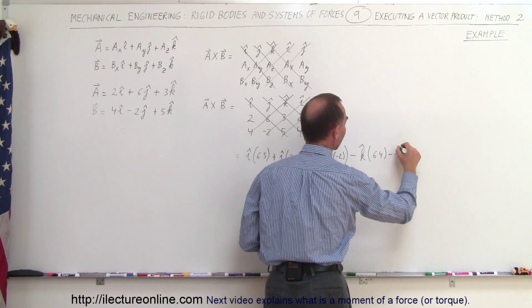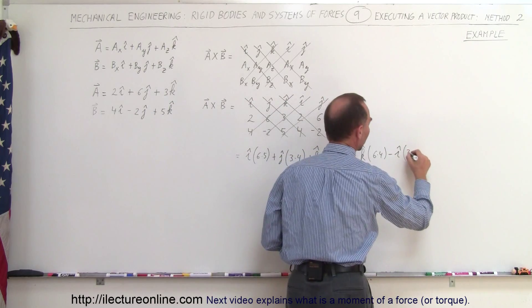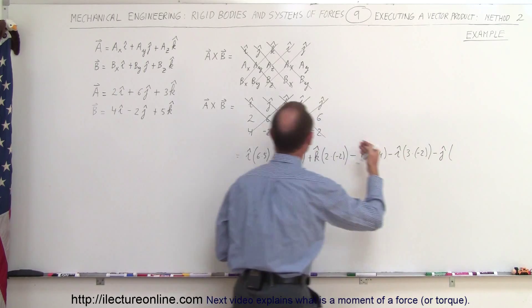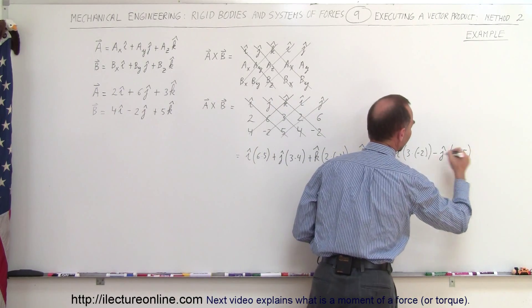That would be I times, and again you multiply it like this, 3 times negative 2, and minus J times 2 and minus J times, and it would be 2 times 5, like that.